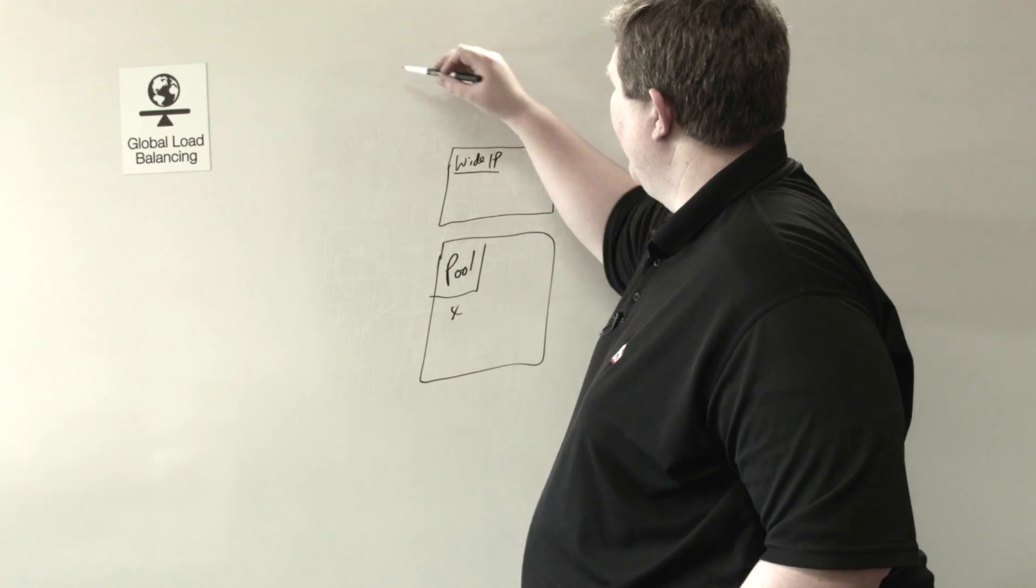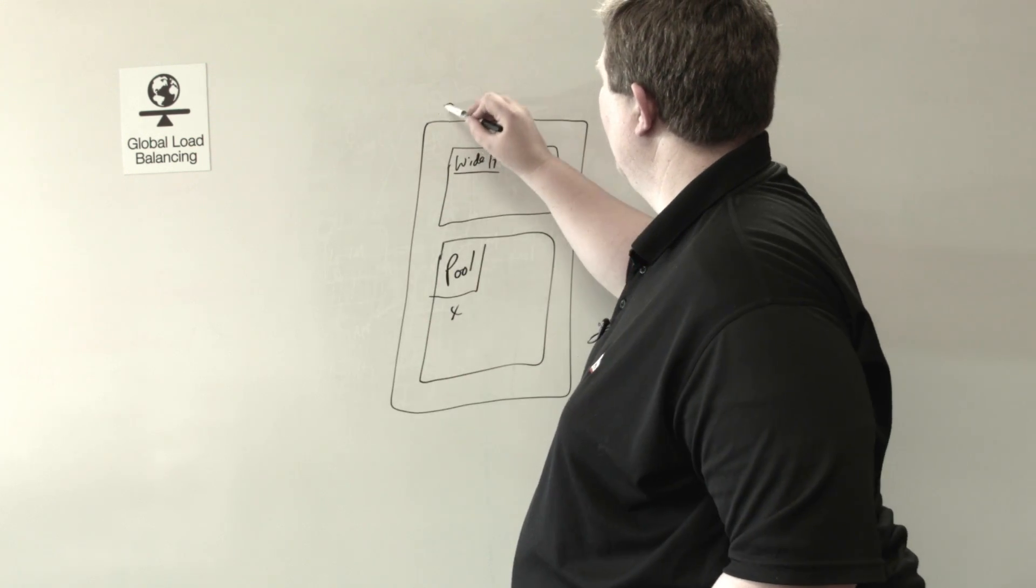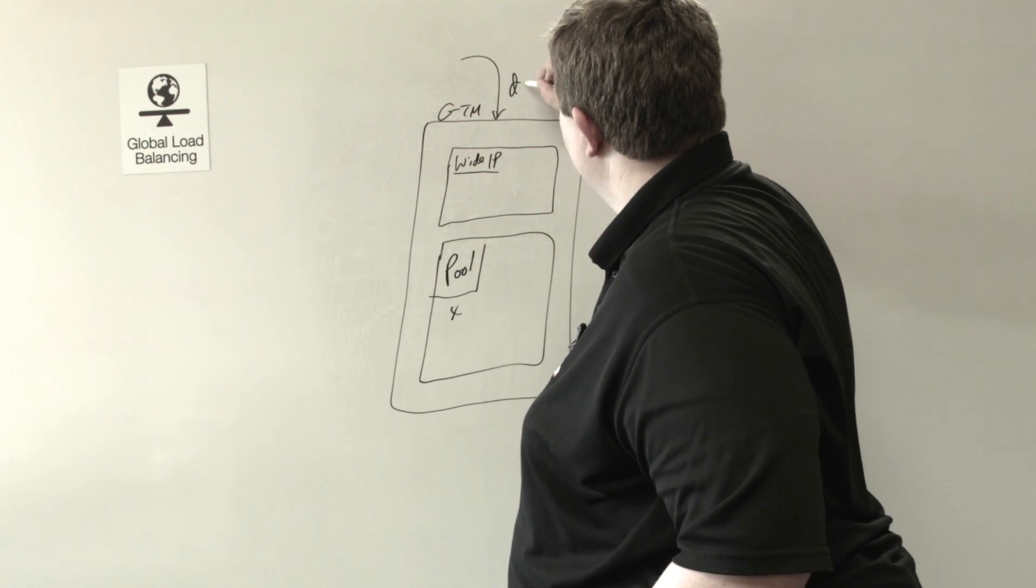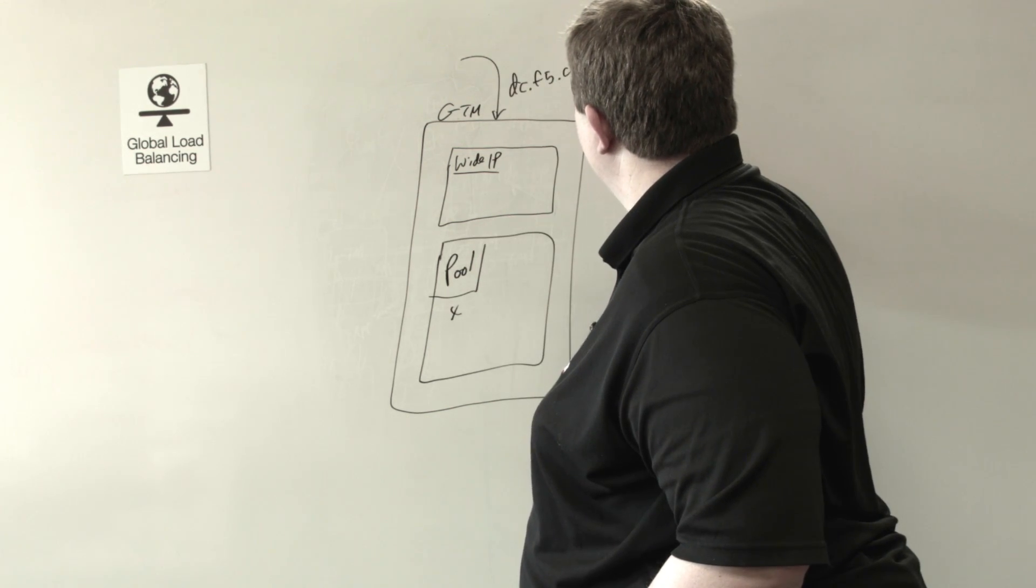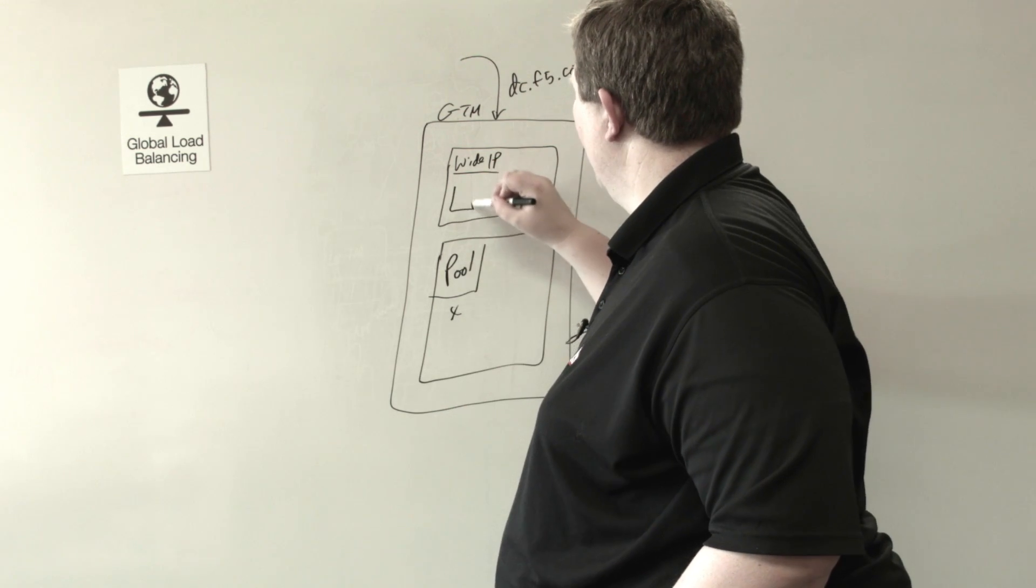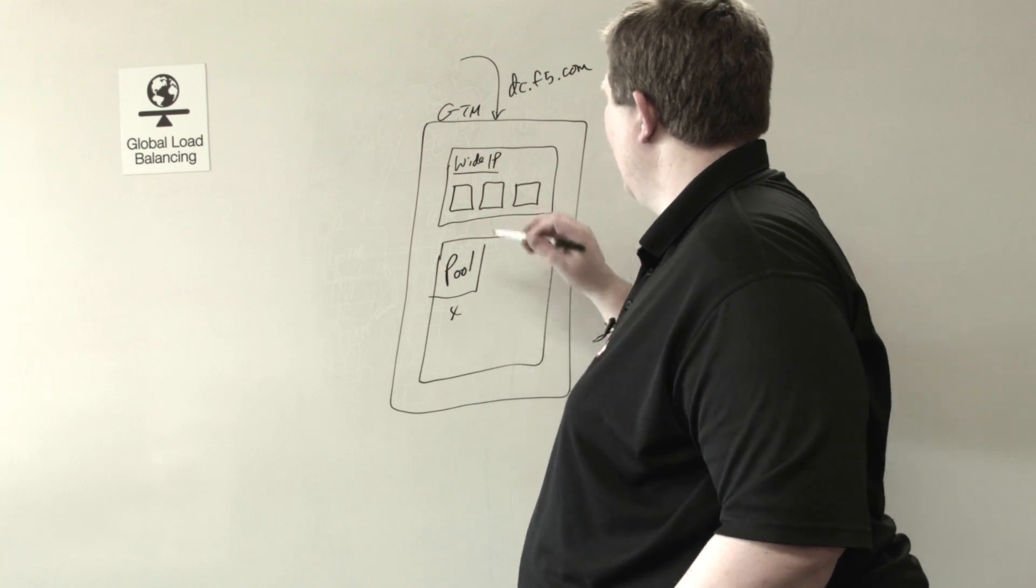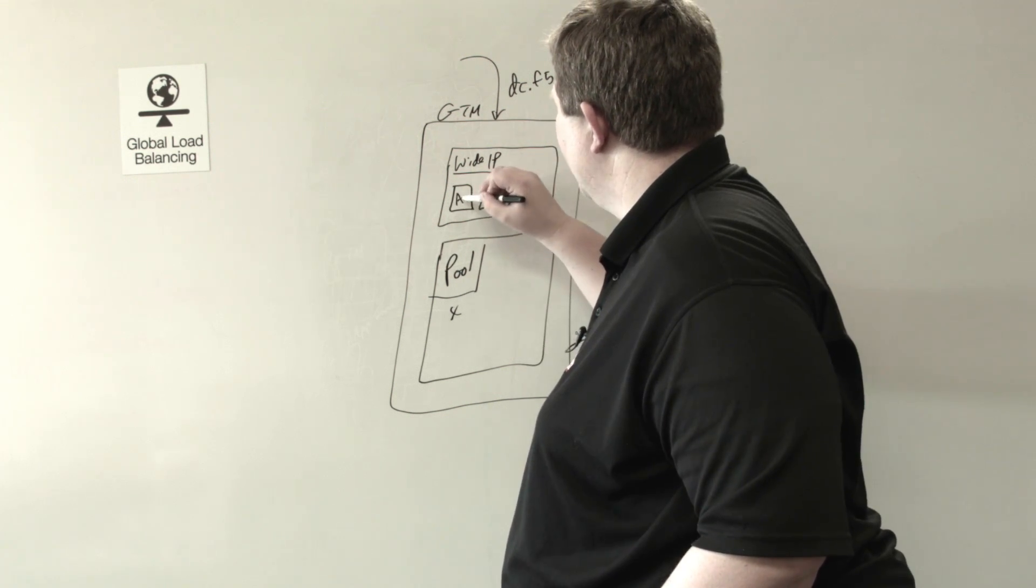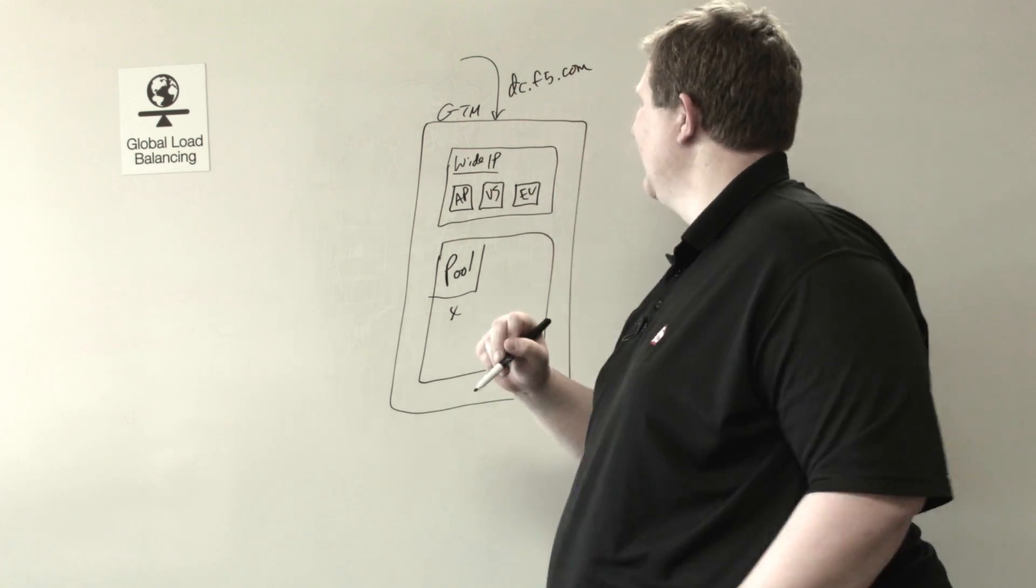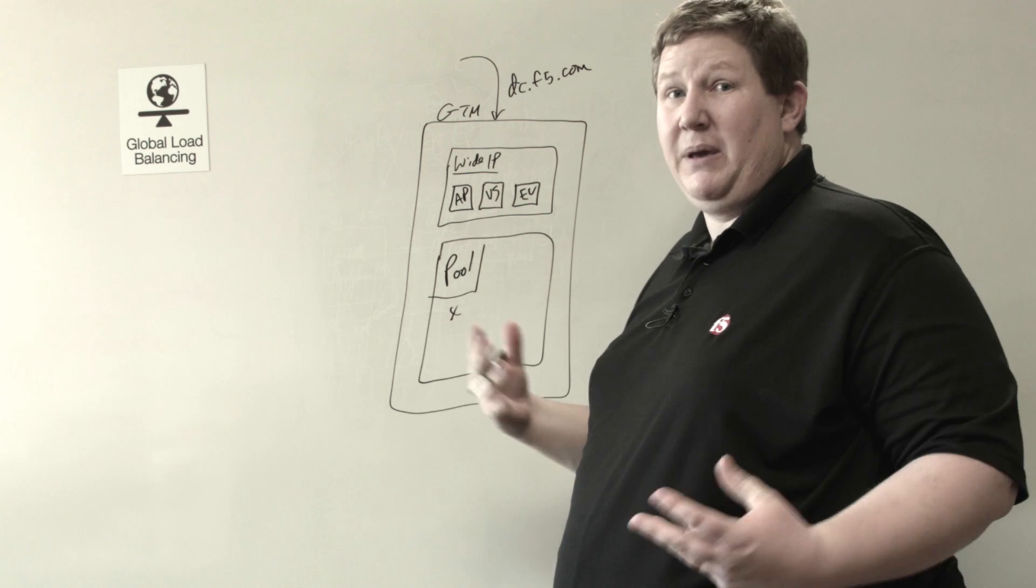So a request comes into GTM, say that's for dc.f5.com. And at the wide IP level, I have three pools configured on my wide IP. Say that's Asia-Pacific, this is US, and this is Europe. I have three different pools, and the wide IP is going to pick a pool.